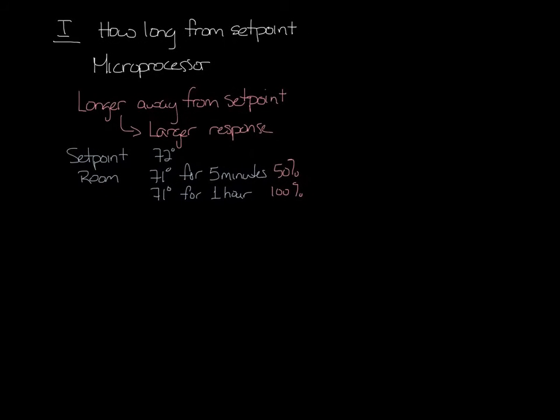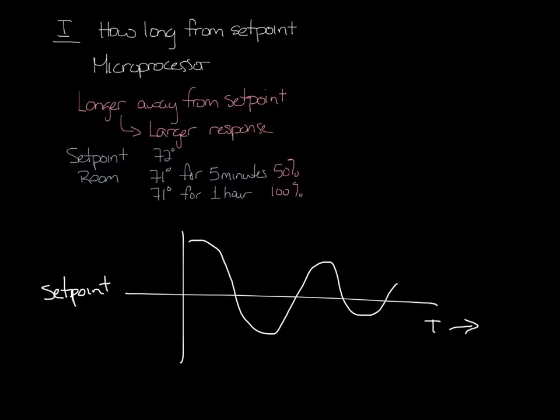PI control would not have as large temperature swings as proportional control, and it would look something like this over time, where it overshoots, but by not nearly as much as with just proportional control.